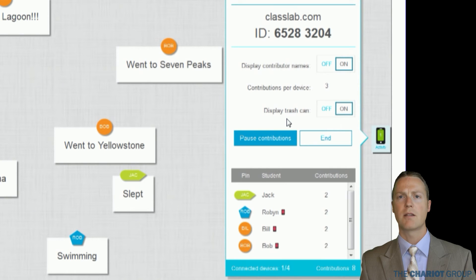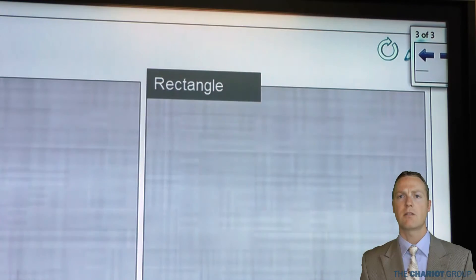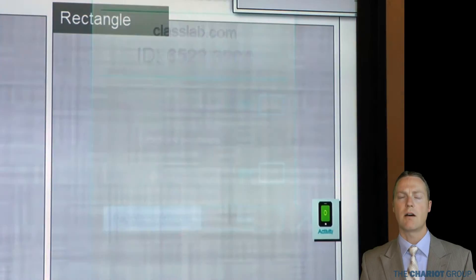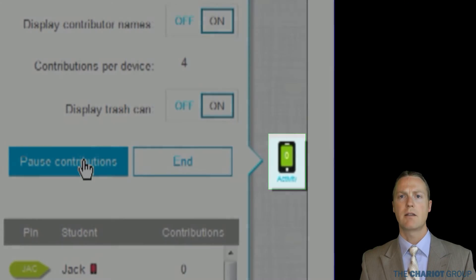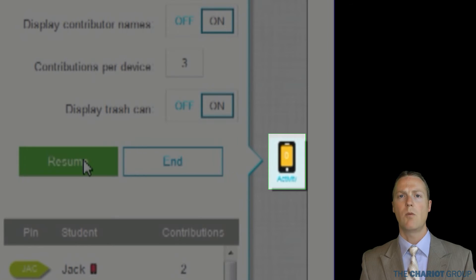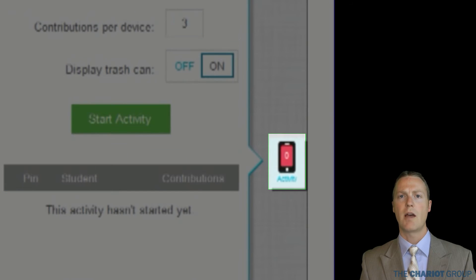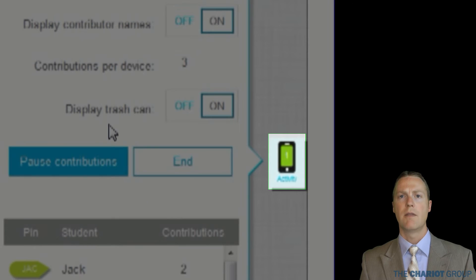The control panel can take up a bit of space and can be hidden either by clicking the X in the top right-hand corner or by clicking the activity icon on the far right. The activity icon shows up green to mean the activity is active, yellow while the activity is paused, and red when the activity is stopped. The number in the middle icon indicates how many currently connected devices there are.